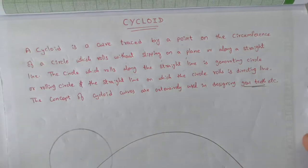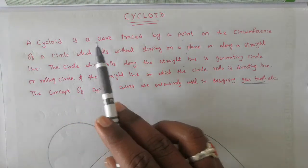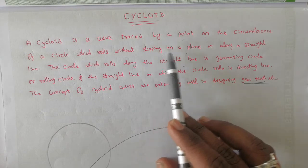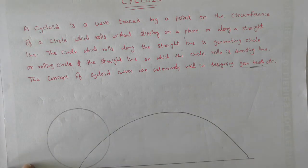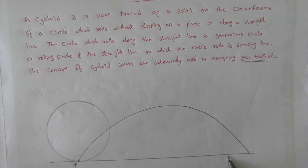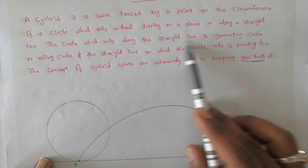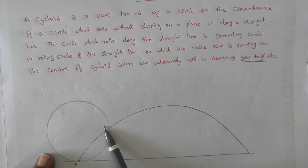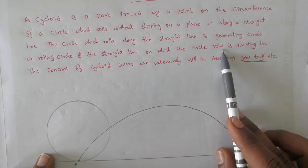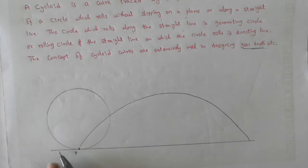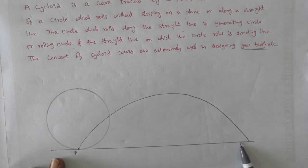A cycloid is a curve traced by a point on the circumference of a circle which rolls without slipping on a plane. The circle that rolls along the straight line is called the generating circle or rolling circle, and the straight line on which the circle rolls is called the directing line.